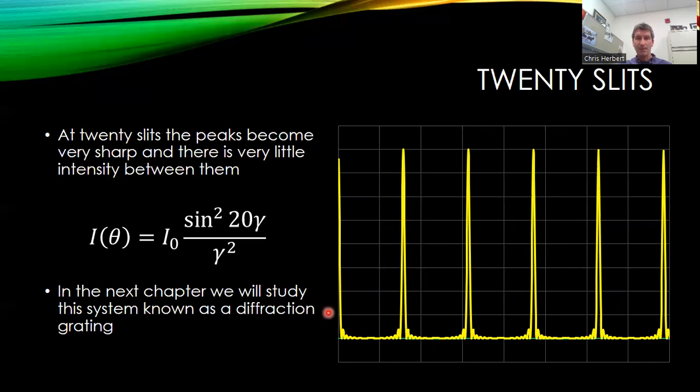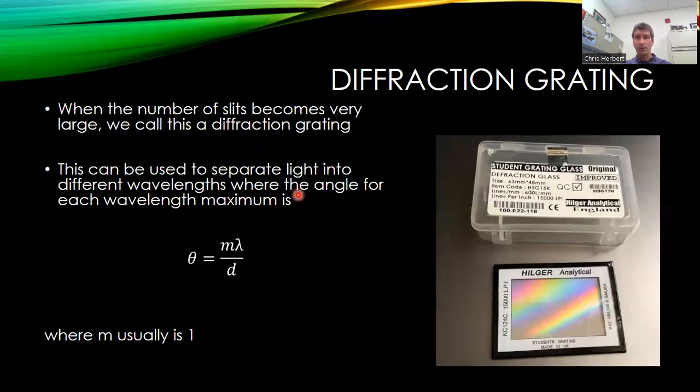And what happens is the constructive interference only occurs for a very, very narrow range of angles. And if we took this to a very large N, it would effectively be what we call a diffraction grating.